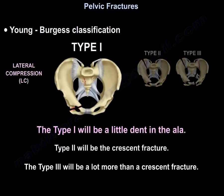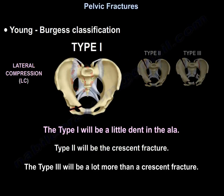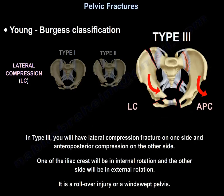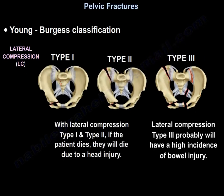Type 1 is a little dent in the ilium. Type 3 is more than the crescent fracture - you have lateral compression fracture on one side and anteroposterior compression on the other side, so one iliac crest is in internal rotation and the other side is in external rotation. It is a rollover injury, also called wind-swept pelvis. In lateral compression types 1 and 2, if the patient dies, they will die from head injury. Lateral compression type 3 probably has a high incidence of bowel injury.